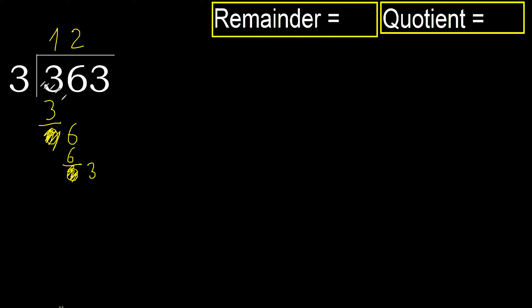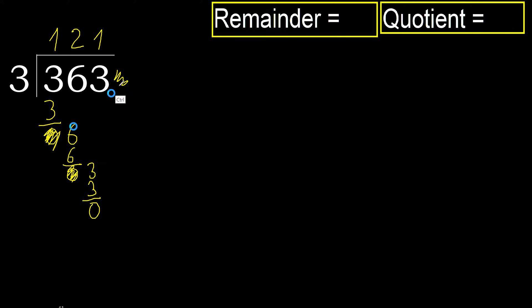3. 3 multiplied by 1 is 3. It's not greater. Subtract. Next — that is not a number, therefore finish it.